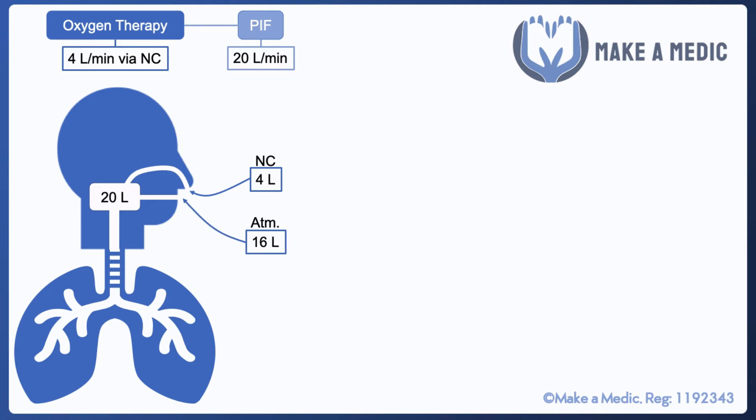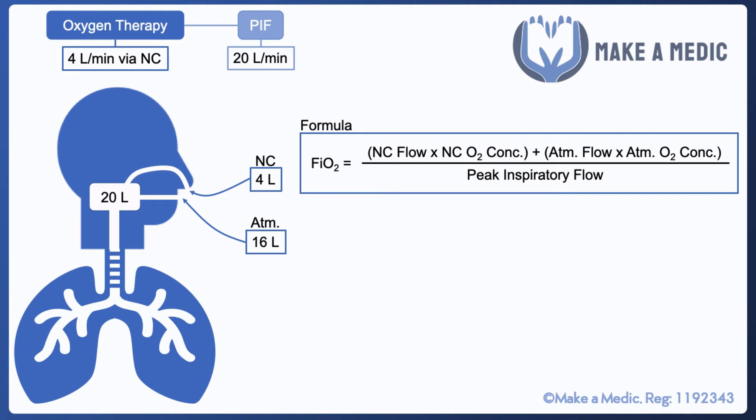This can be brought together using the following formula to determine what the fraction of inspired oxygen is. Of course, there's going to be a number of other factors that do play into this, such as the amount of dead space. However, just to keep things simple, this is a formula that can be used to roughly gauge the fraction of inspired oxygen when using oxygen therapy. In this example, we can see that she has 4 liters of 100% and 16 liters of 21% atmospheric oxygen. If you average that out, that would give roughly a fraction of inspired oxygen of 36.8%.